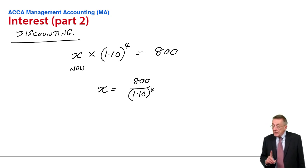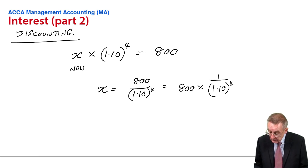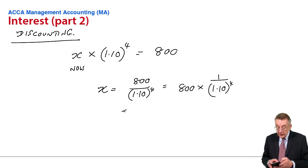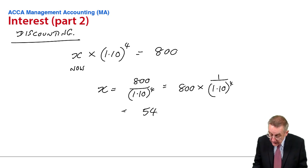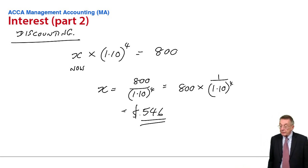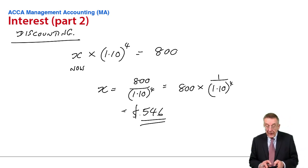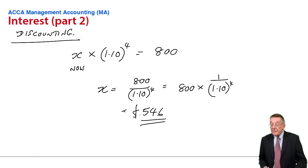It may seem a bit silly, but there's a reason for this. We tend to write it as 800 times 1 over 1.10 to the power of four — it's exactly the same thing. If you divide by 1.10 to the power of four, 800 divided by 1.14 times, we get 546 to the nearest dollar. We generally work to the nearest dollar. If we were to deposit 546 now, then with interest at 10% a year, after four years it would have grown to 800.